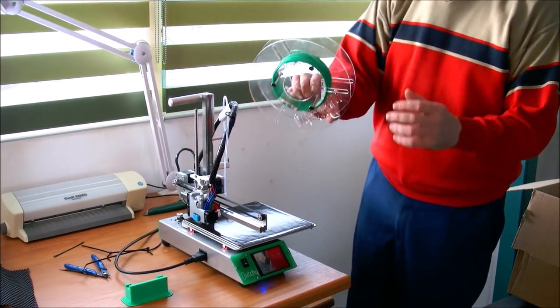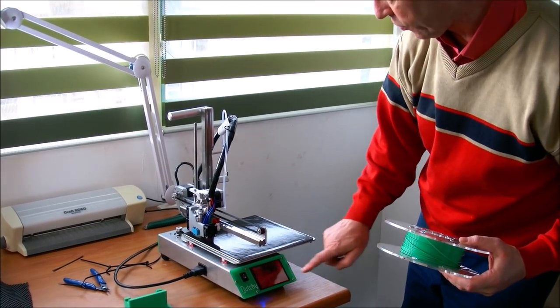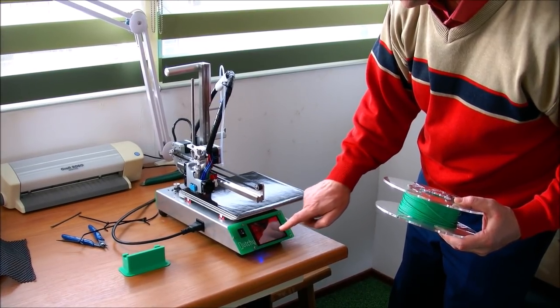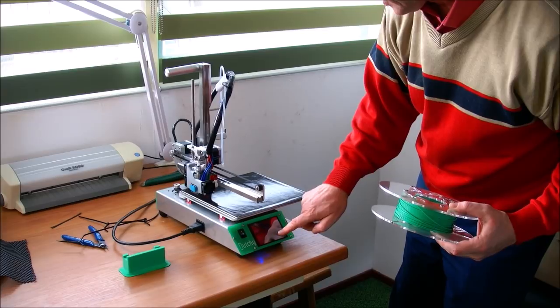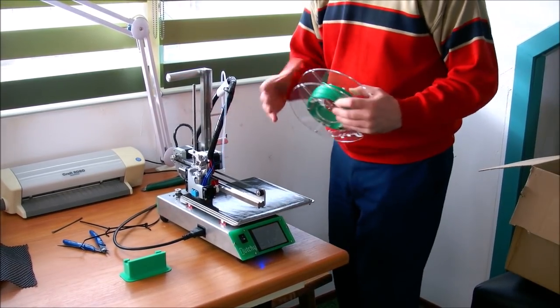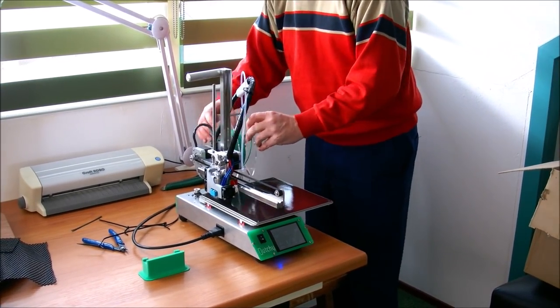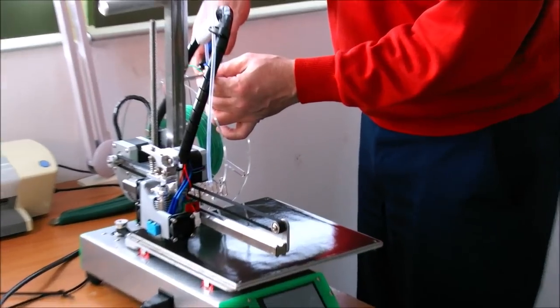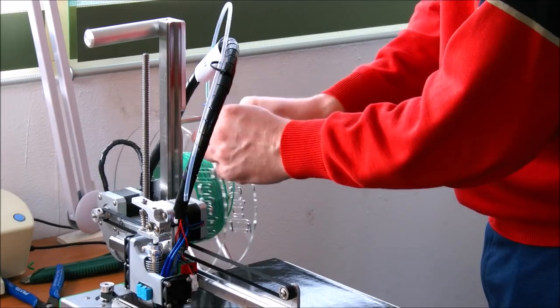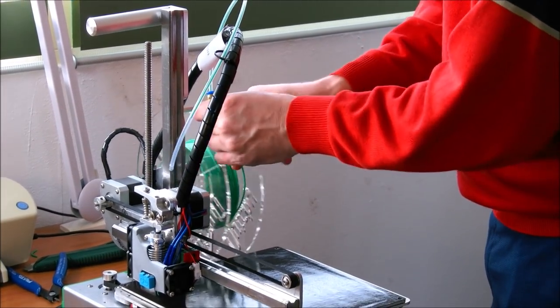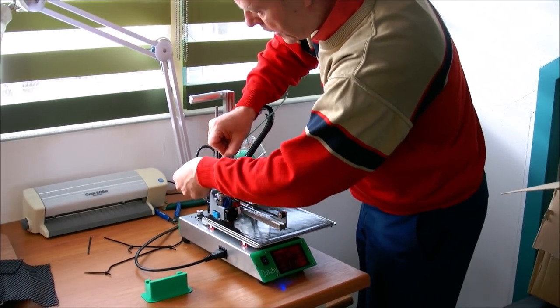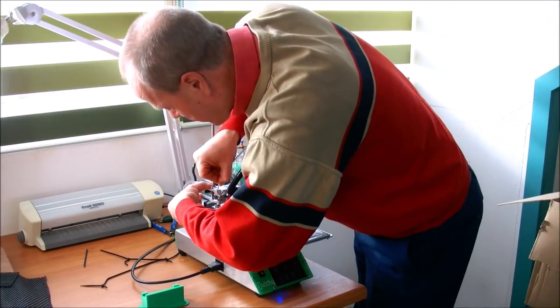Next step is to prepare the filament. Well, let's first turn on the heater. Yeah, so now the extruder is heating up while I'm preparing the rest of it. Insert filament into the tube. So far so good.